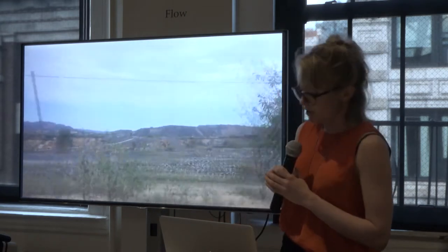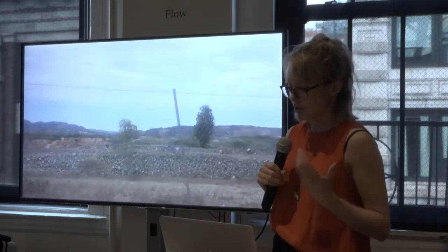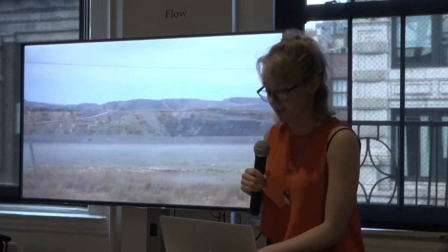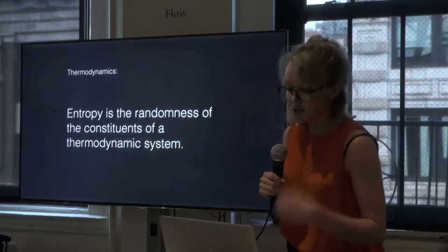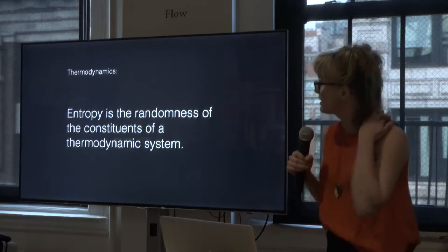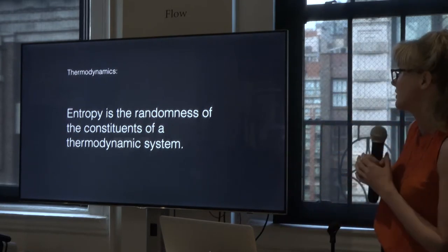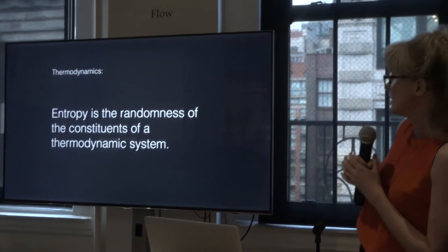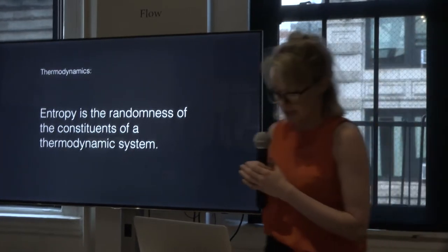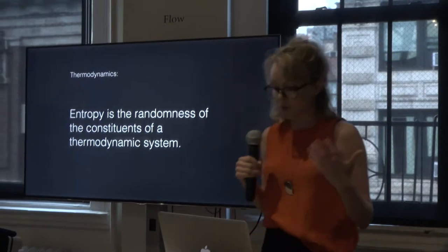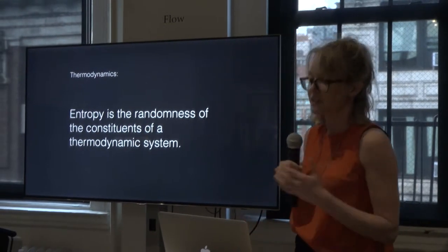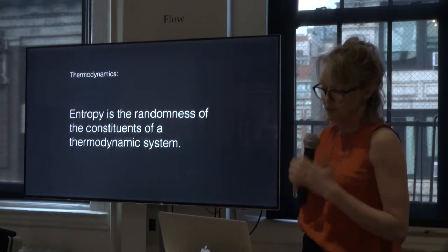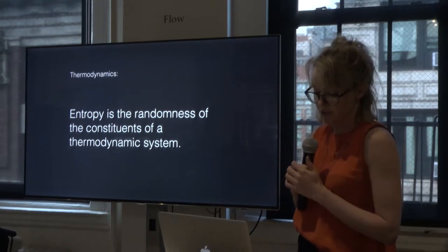The term entropy has two definitions: one in thermodynamics and one in information theory. Starting with the thermodynamic definition, entropy is the randomness of the constituents in a system. In other words, if you heat or increase the temperature of a gas, it increases its entropy, its randomness. So in what ways can we see this in our shared environmental systems?